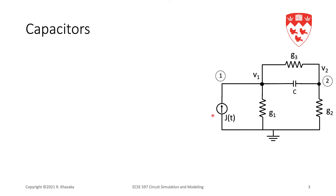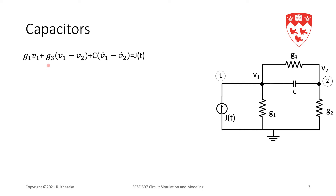As usual, we're going to start with an example. We have an example here with a capacitor in it. Let's write Kirchhoff's Current Law at every node. We're going to write KCL at node 1, summing the currents leaving the node. That's the current leaving through resistor G1, so that's G1·V1 — the current in this resistor.